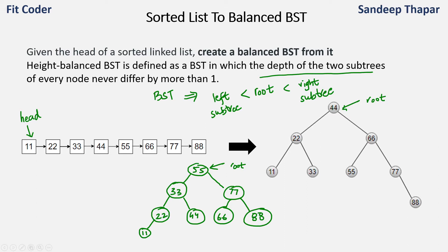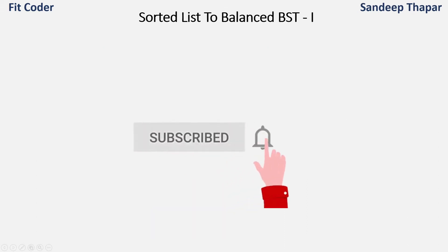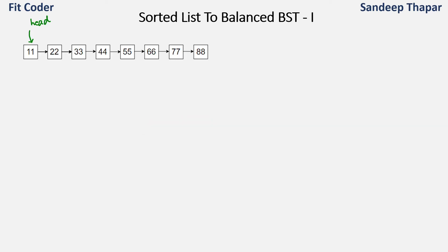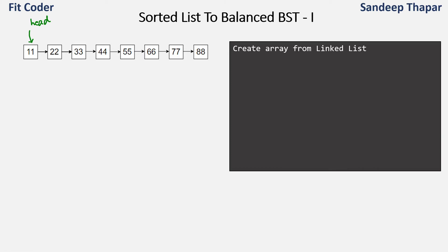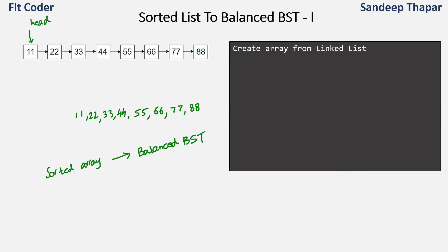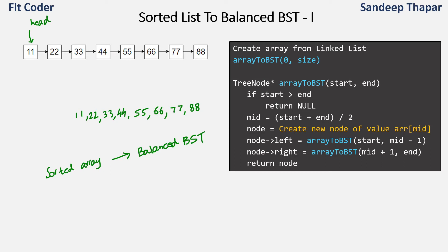In this video I will focus on two methods. In the first method, what we can do is convert this linked list into an array. Once we have an array, it becomes the problem of converting a sorted array to a balanced BST, which I have already explained in my previous videos. I will link that video in the top right corner and in the description. The problem with this method is that the interviewer has given you a sorted linked list, but converting it to an array defeats the whole purpose. So you can point out this solution, but most of the time it will not be accepted, and you will need to use solution number two.